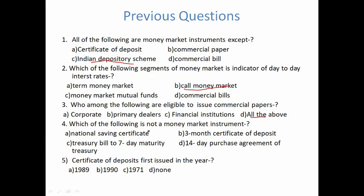Which of the following is not a money market instrument? Options: national savings certificate, 3-month certificate of deposit, treasury bill with 7-day maturity, and 14-day repurchase agreement. The money market maturity period is less than 1 year. The national savings certificate is a capital market instrument, not a money market instrument — so the answer is national savings certificate. Note: certificate of deposit was first issued in the year 1989.